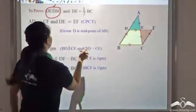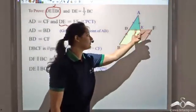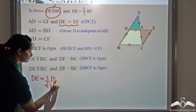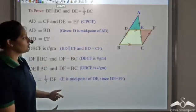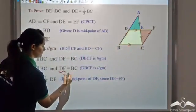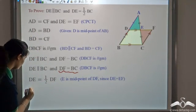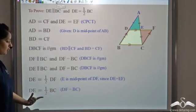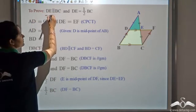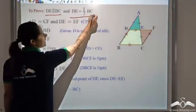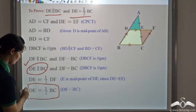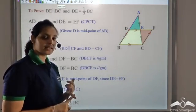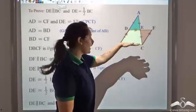Now I need to show that DE is half of BC. We know DE equals EF, so DE is half of DF. Since DF equals BC, I can substitute to get DE equals half of BC. So the two things I wanted to prove — DE parallel to BC, and DE equals half of BC — are both proved. The midsegment is parallel to the third side and half of the third side.